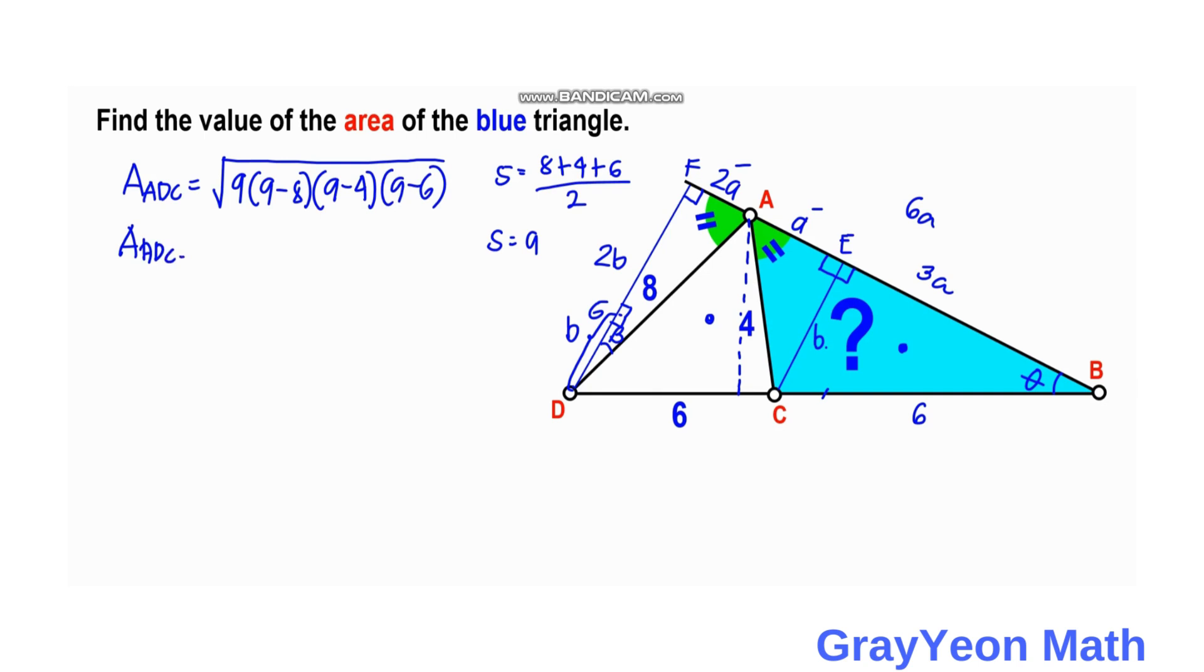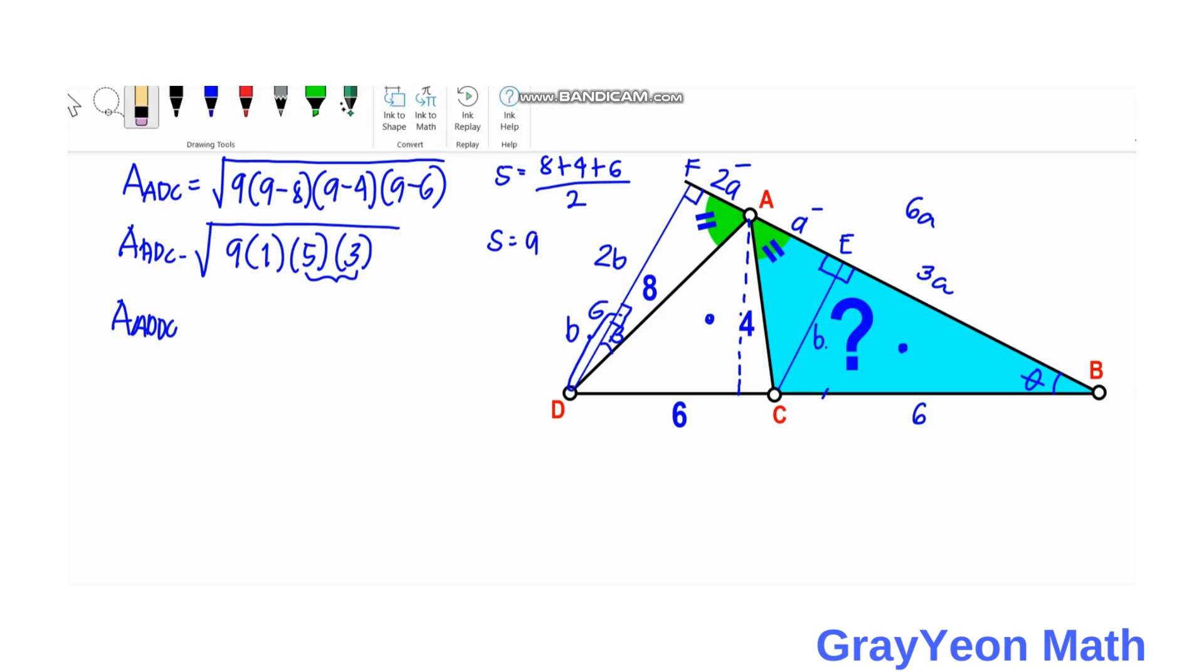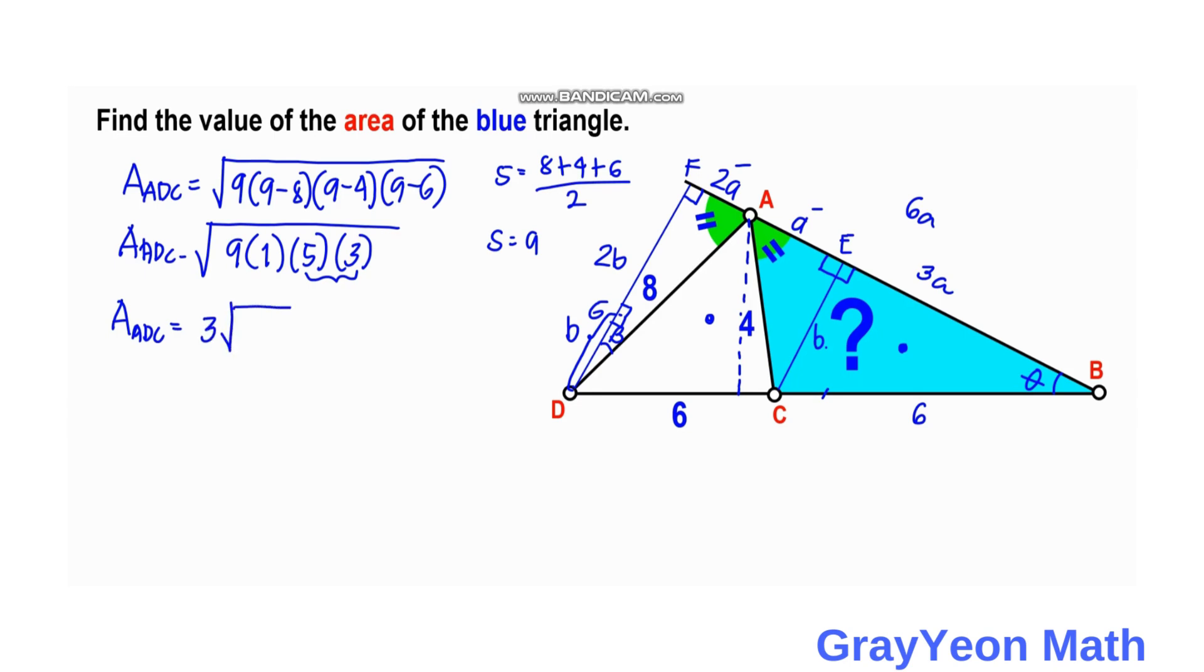So this will be 9 times (9 minus 8) times (9 minus 4) times (9 minus 6). This gives us 9 times 1 times 5 times 3. So the perfect square is 9 and inside this, 15. Area of ADC is equal to 3 square root of 15.